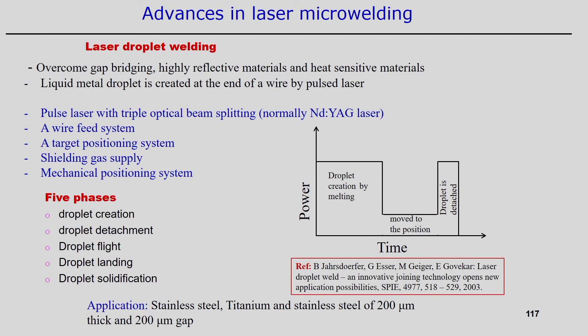The laser energy is not directly used all at once for droplet creation. The optical beam is split into three different beams. A wire feed system is also required along with a target positioning system — to position where the droplet must be transported. The process also needs shielding gas supply and a mechanical positioning system so the droplet can be accurately placed in the required position.